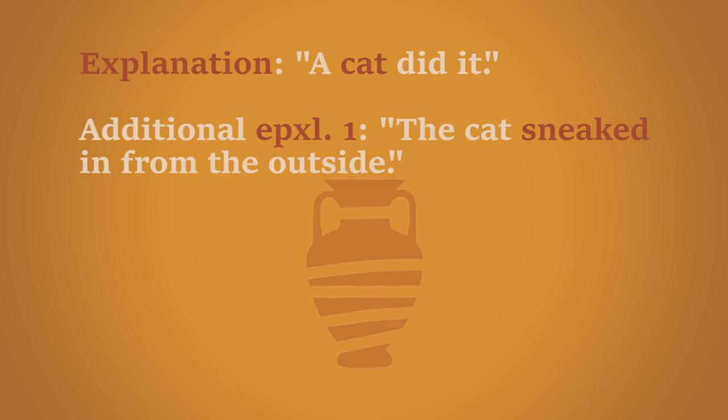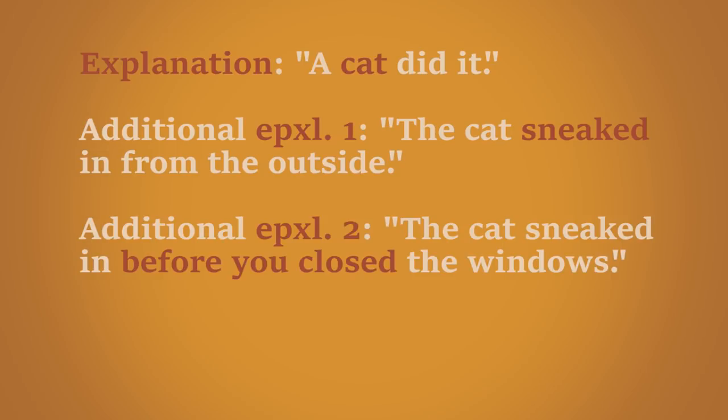So Jimmy says some cat must have sneaked in from the outside. You remember closing all the doors and windows. So he says it must have entered the house before you closed them.